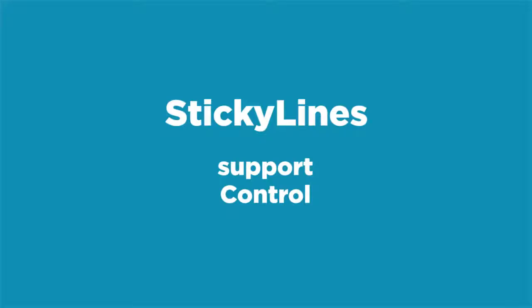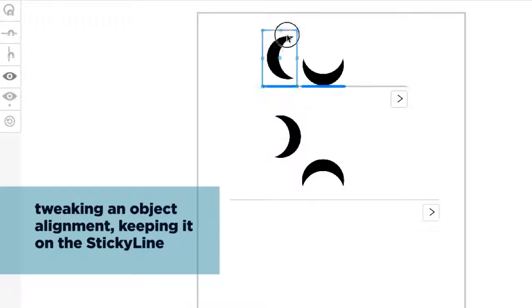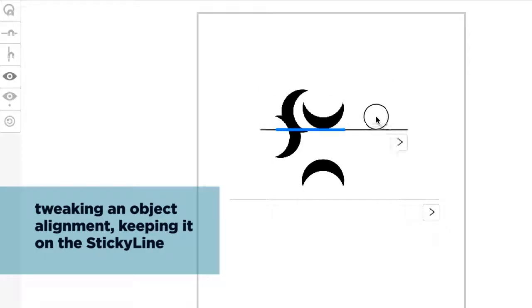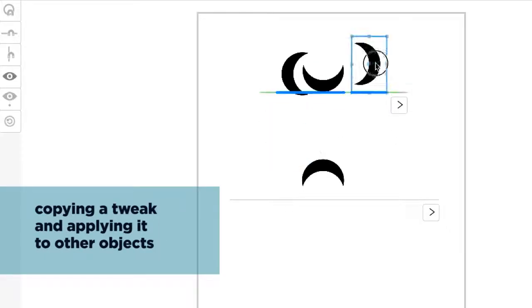Sticky lines support control. Users can adjust a visual alignment by creating what we call a tweak, displayed as a purple line. Tweaks can be copied onto other objects.